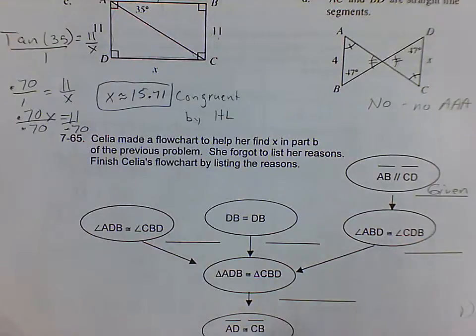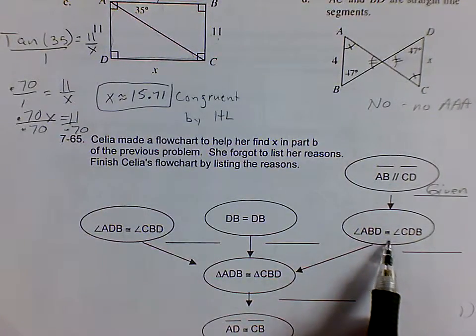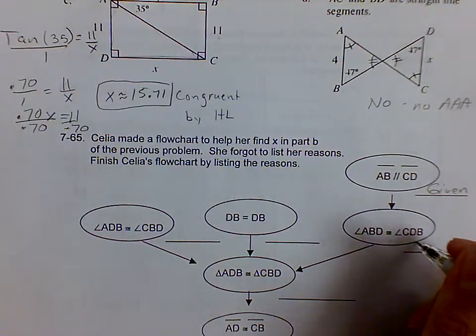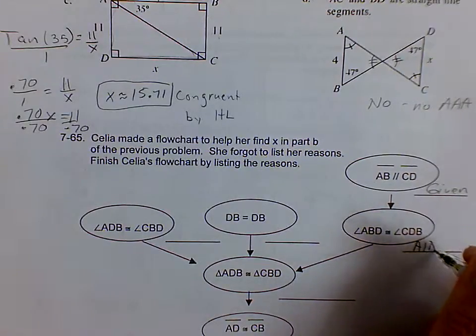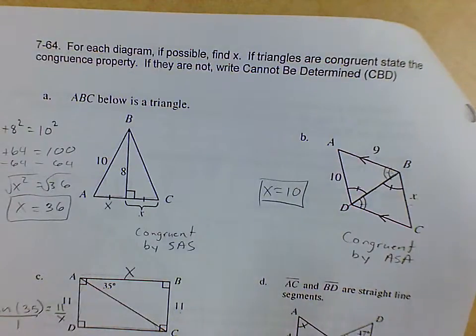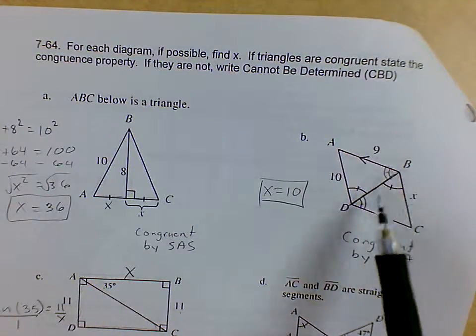So next question says ADB is congruent to CDB. So tell me, how do you know this is true? The answer for that one is going to be alternate interior angles. So if we have parallel lines, then we know that the alternate interior angles are congruent.